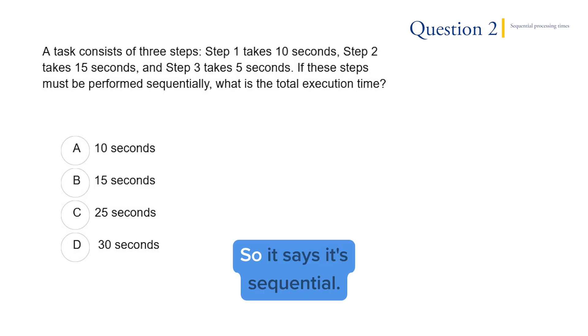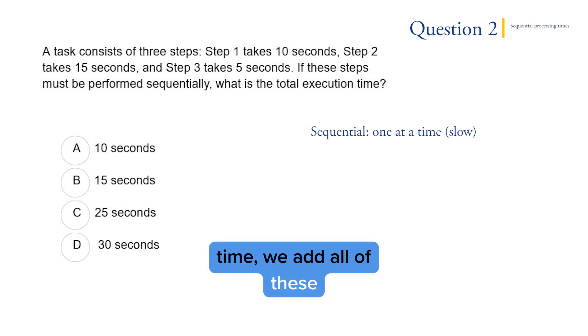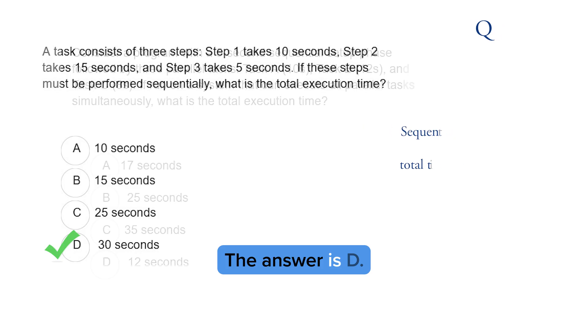Question two: What is the total time? So it says it's sequential. Remember, sequential is one at a time and slow. To get the sequential time, we add all of these times together because they happen one after the other. So the answer is 10 plus 15 plus 5, and that's 30. The answer is D.